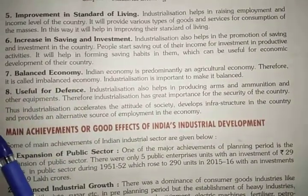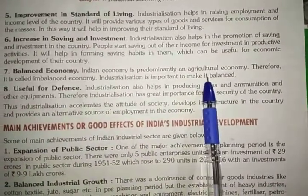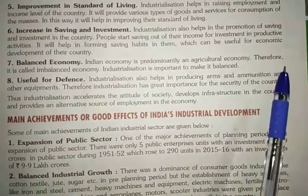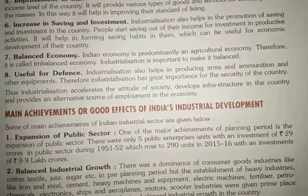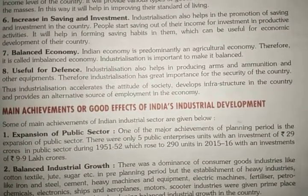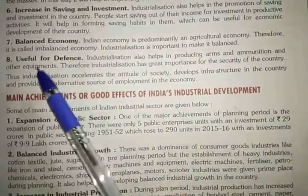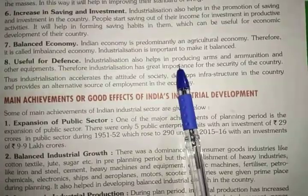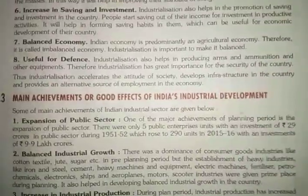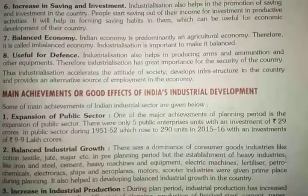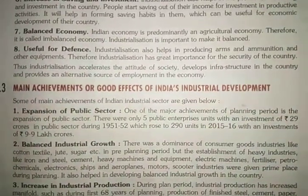Next is balanced economy. India is already predominant in agriculture and most of the population is dependent on it. If there are industries, some people will shift toward industries from the agriculture sector, so the overpopulation in agriculture will decrease and there will be a balance between the two sectors. Last is useful for defense — industrialization helps produce arms, ammunition, and other equipment used by the defense sector.